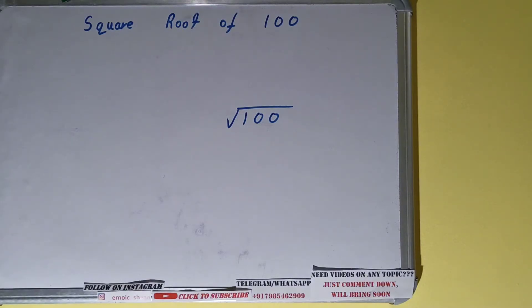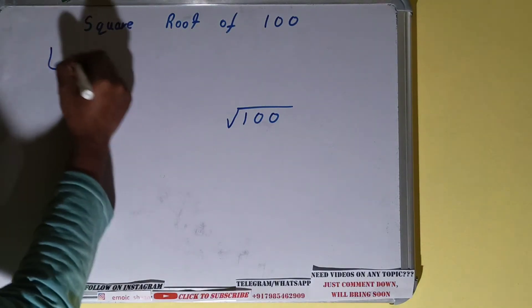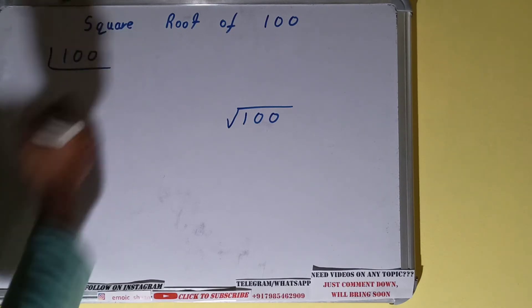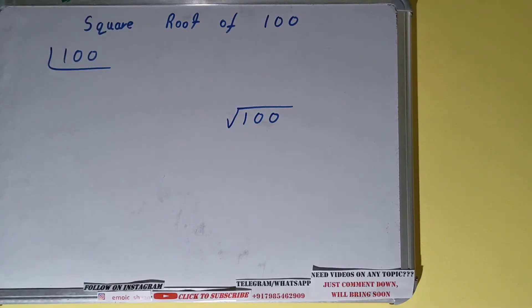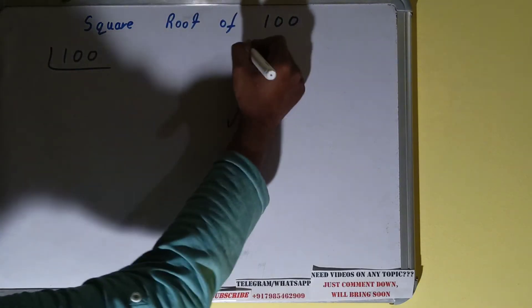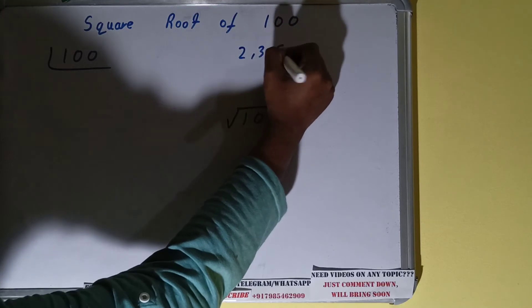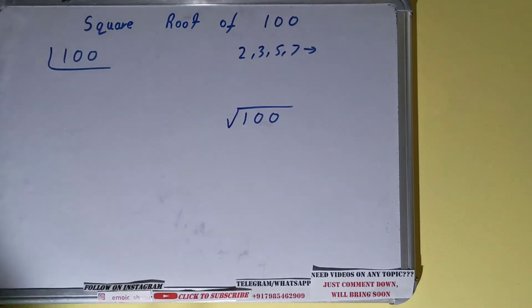So now let's write square root 100—that is what we need to find. As I told you, we'll be using prime factorization method, so we need to do the prime factorization of the number 100. Now for doing the prime factorization, you should be knowing what are prime numbers. Prime numbers are numbers that are divisible by one and the number itself, like 2, 3, 5, 7, and so on.